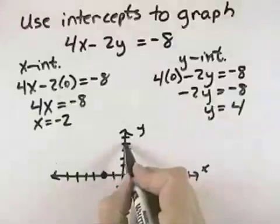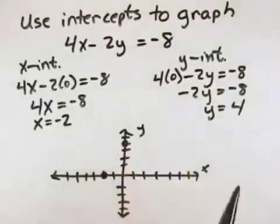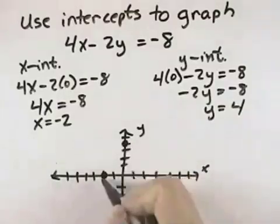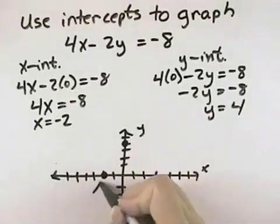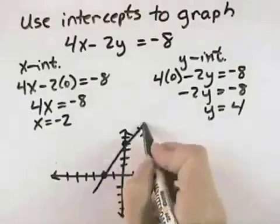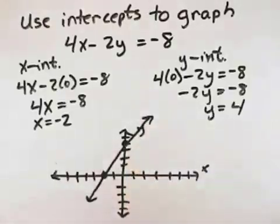So counting up on the y-axis, our graph will cross the y-axis at 4. We have our two intercepts, and we connect them and extend through them with the graph of our line.